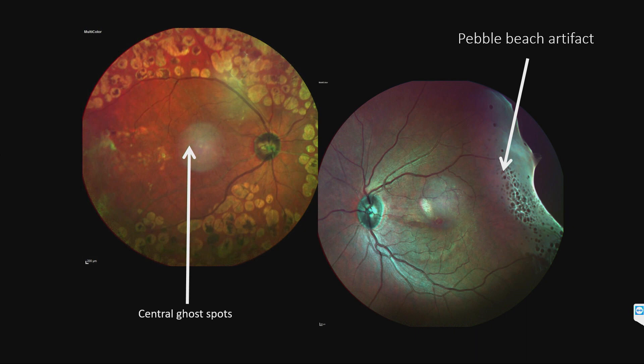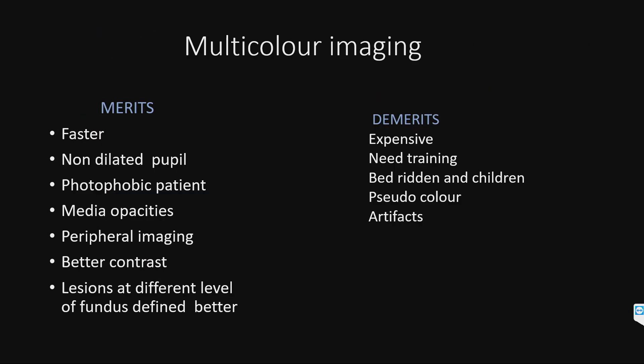One has to be aware of artifacts in multicolor imaging, namely the central ghost ports and the pebble beach artifact. Advantages: it is faster, can be done with a non-dilated pupil, photophobic patients get a better image because it doesn't use bright light, good clarity in media opacities, peripheral imaging is at its best, and it has better contrast with lesions at different levels of the fundus better defined.